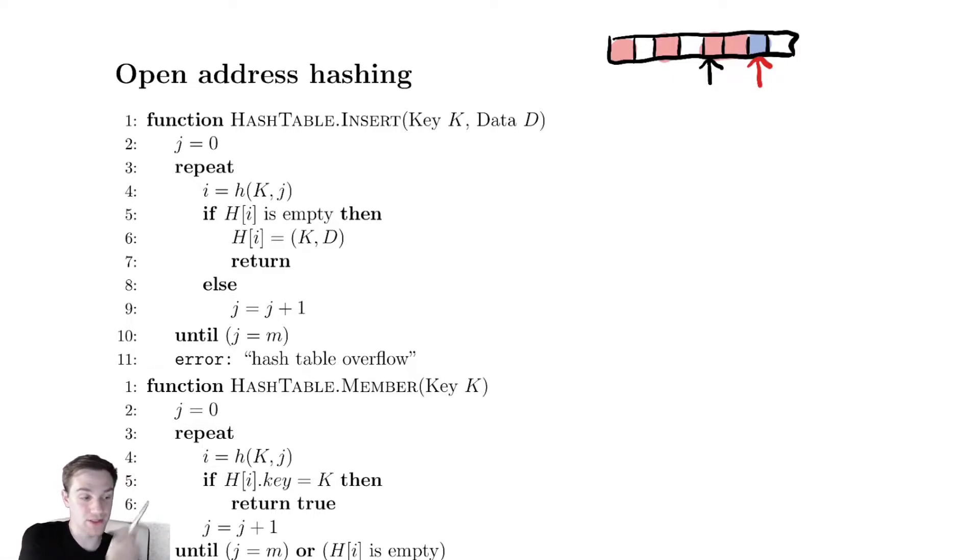Let's go through this code. We start with the rehashing variable being zero and keep rehashing until we find an open location. We have a repeat until loop. The location we hash to is i = h(k, j), because we want to be able to rehash. If the location at i is empty, we just add it.